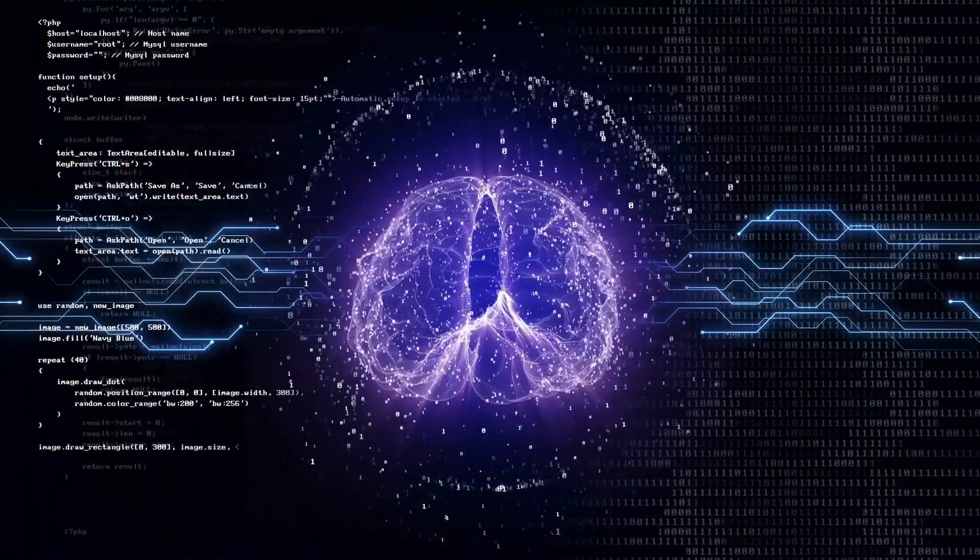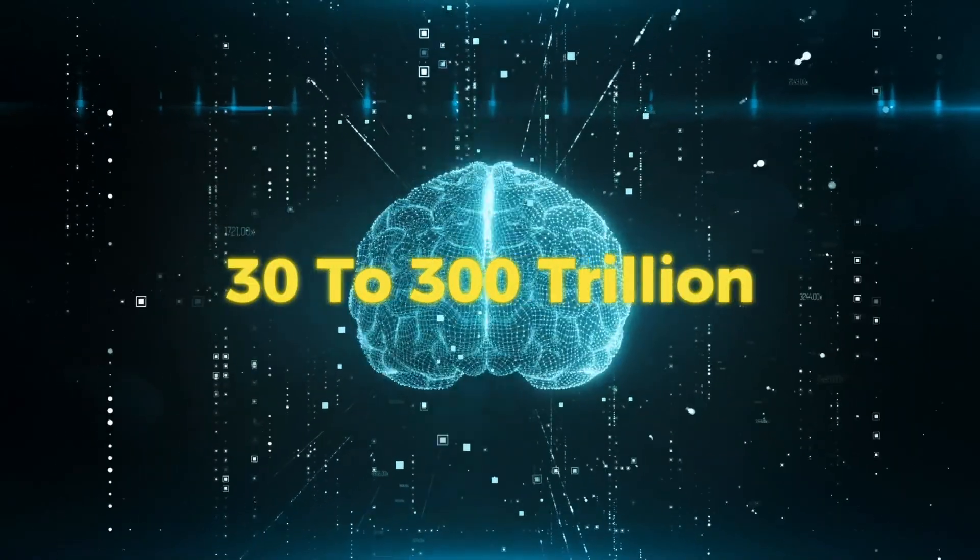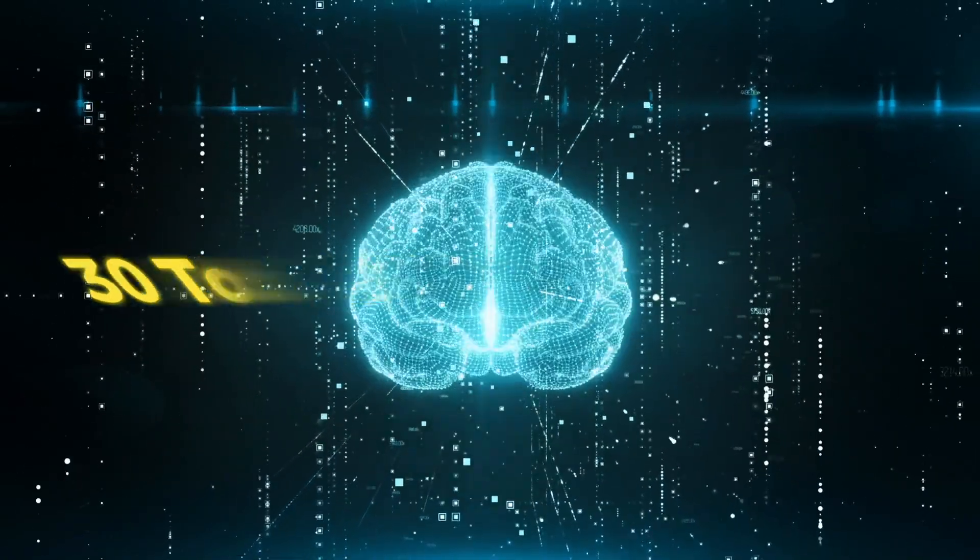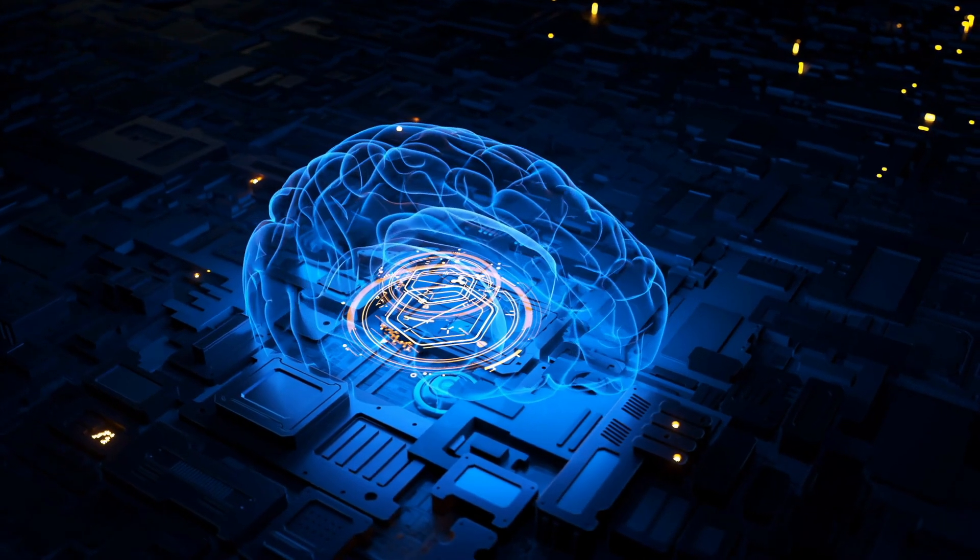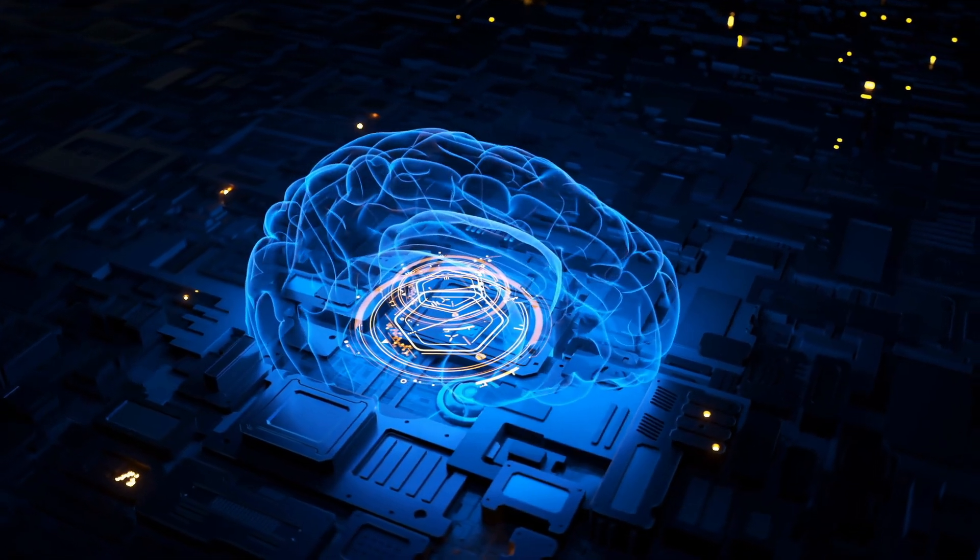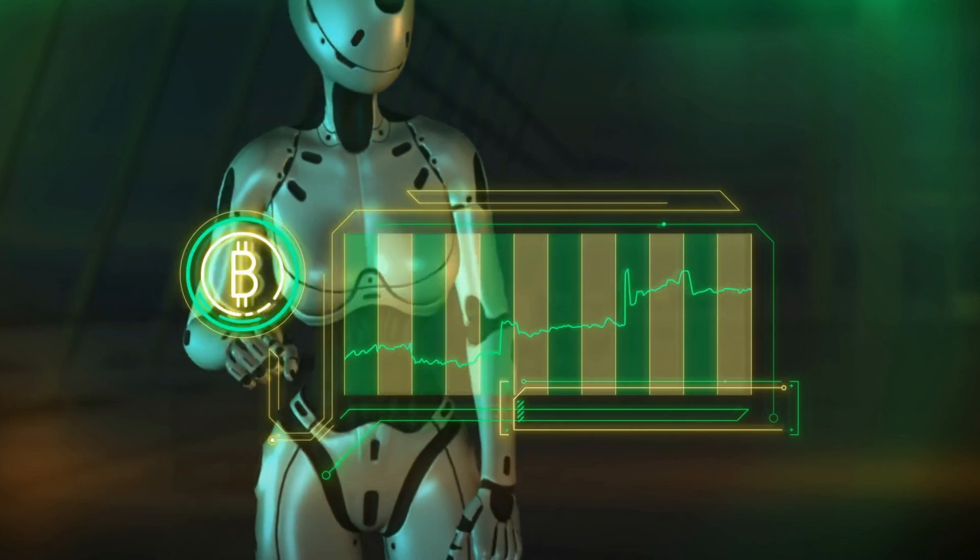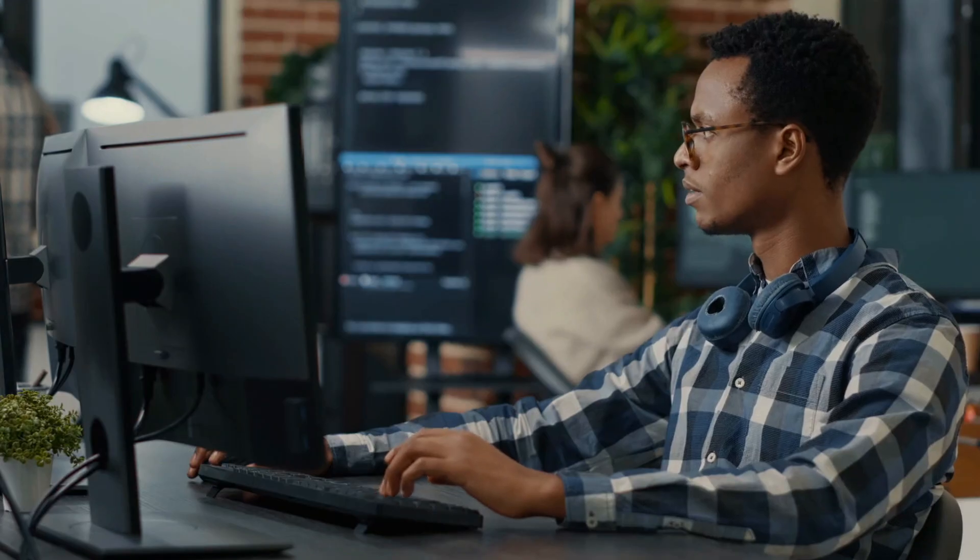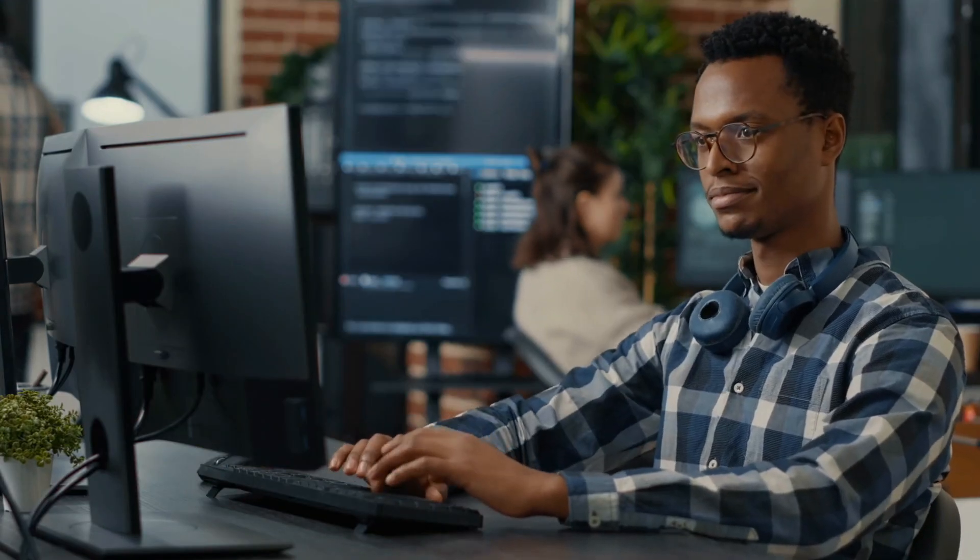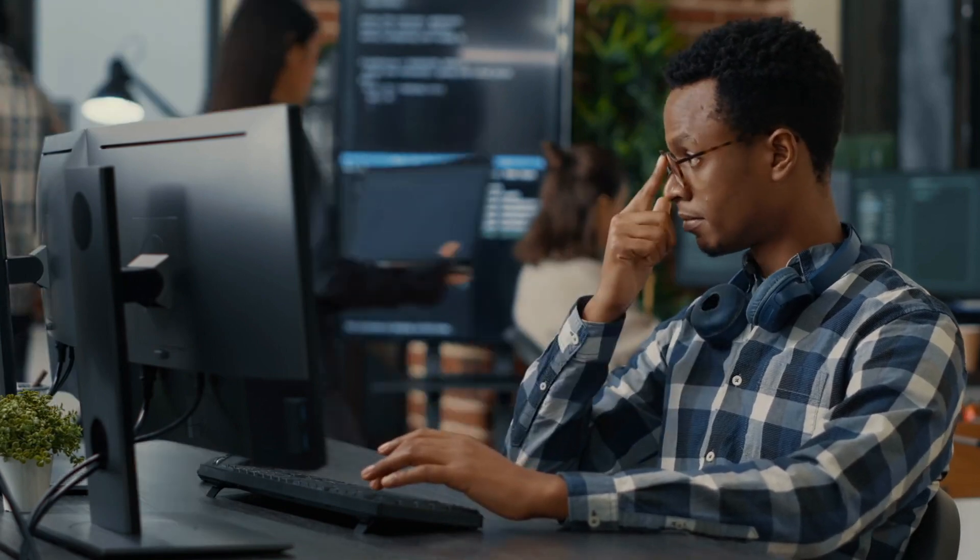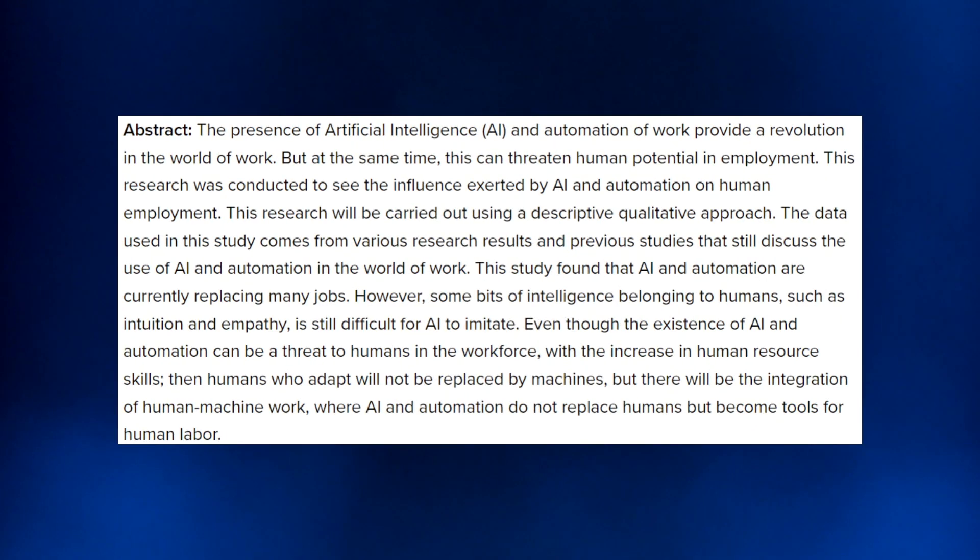The human brain, which is often considered the benchmark for AGI, has a staggering 30 to 300 trillion synaptic connections, highlighting the immense complexity that AI systems must emulate. While AGI could make many jobs more efficient by automating certain tasks, it also raises concerns that it could replace human workers entirely in some jobs. Studies show that AGI and automation may cause some job losses as machines start doing work that humans currently do.